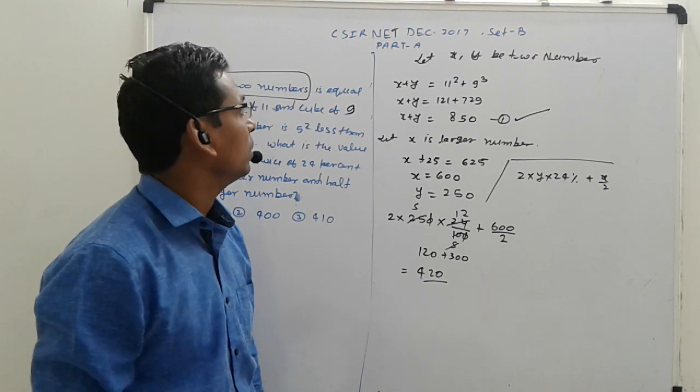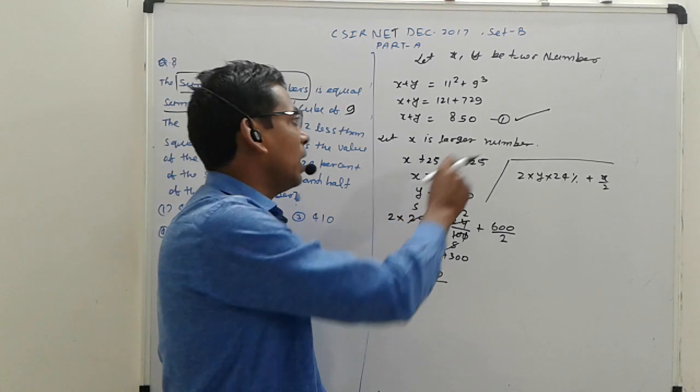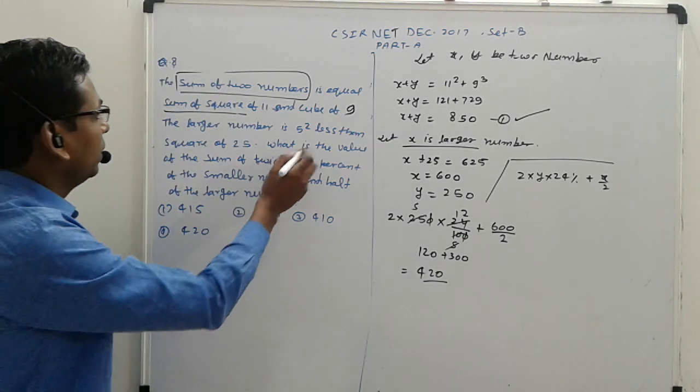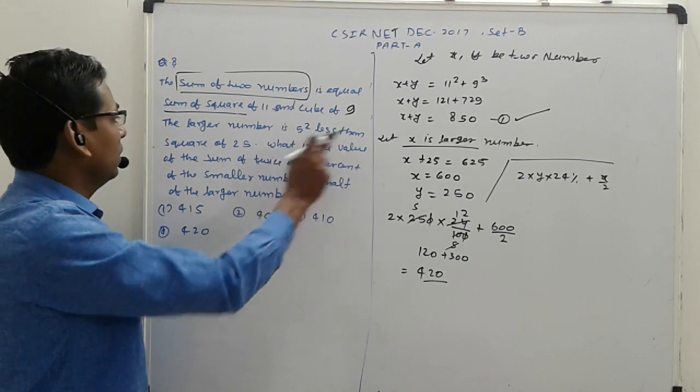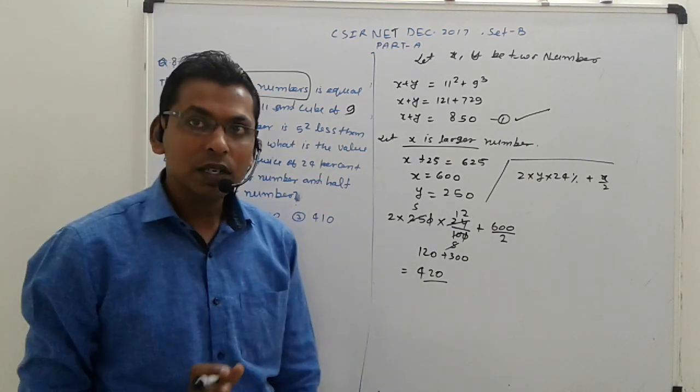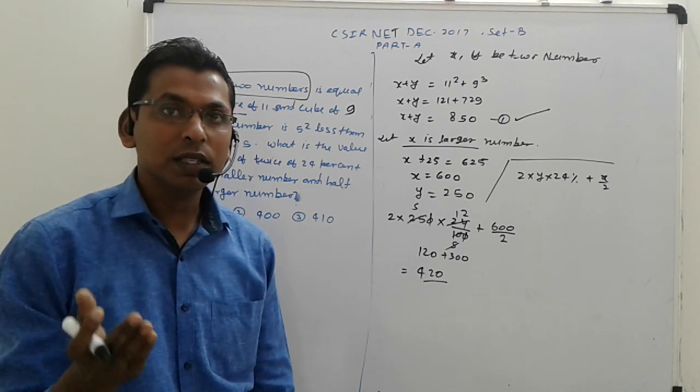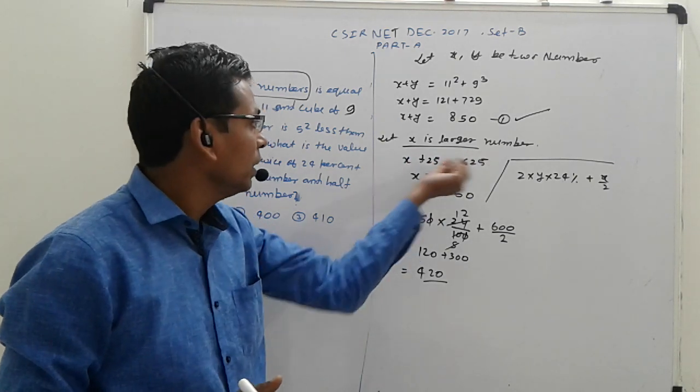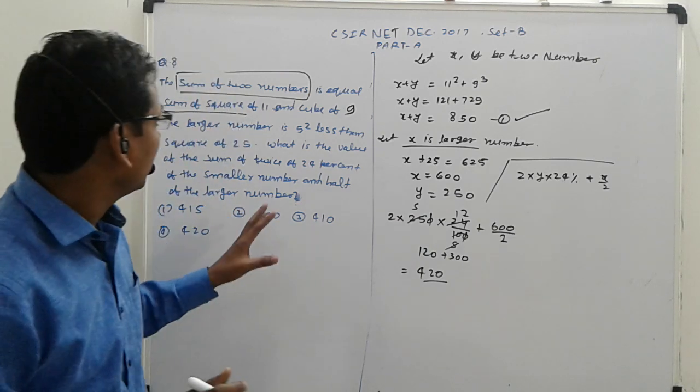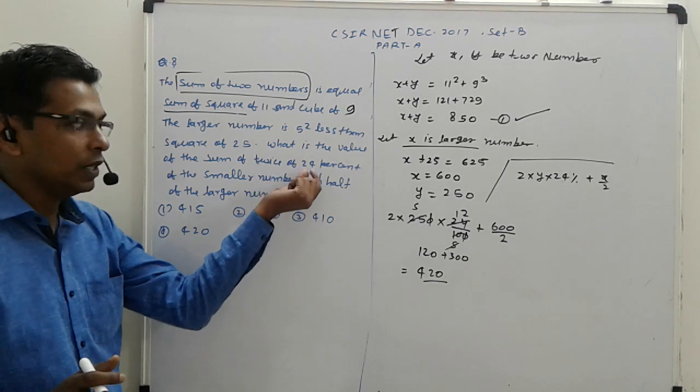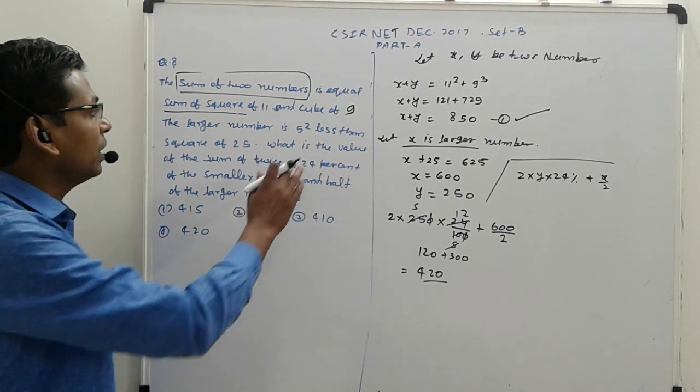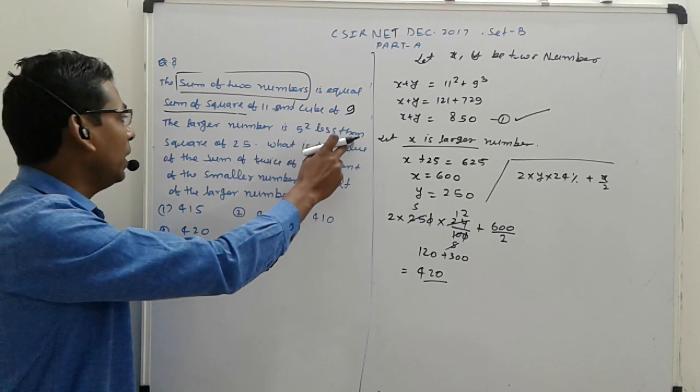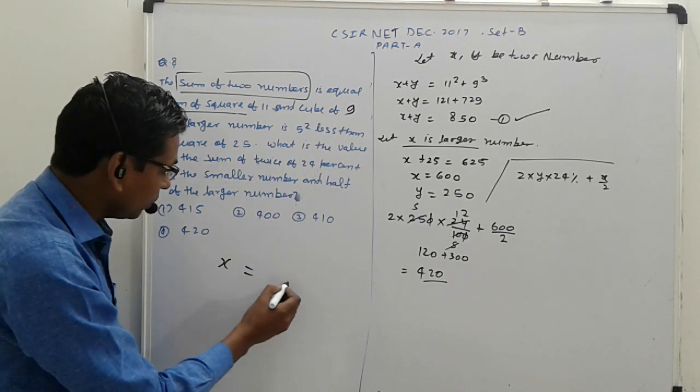For the cube of 9, that's 729. Now suppose x is the larger number. The larger number is 5 less than square of 25, which means x is equal to 25 squared minus 5, so x equals 620.